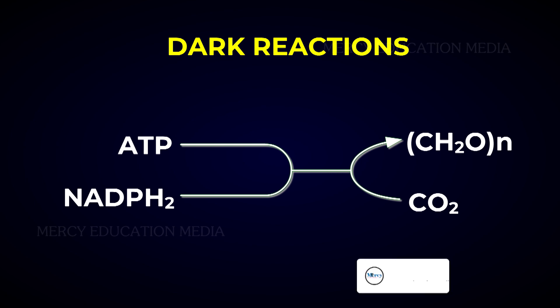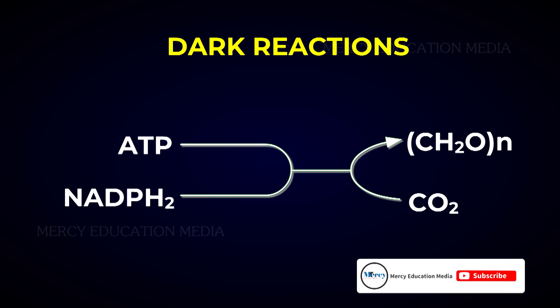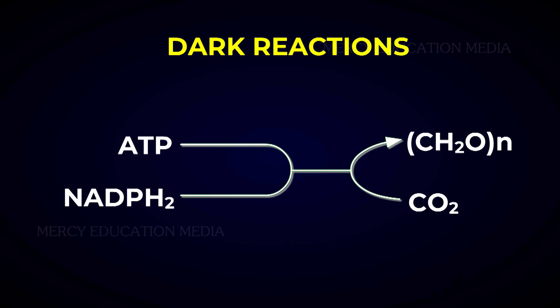The photosynthetic reactions in which carbon dioxide is reduced to carbohydrates, making use of ATP and NADPH2 generated by light reactions, are collectively called dark reactions.